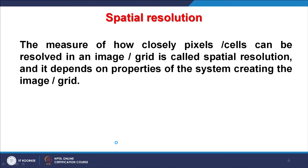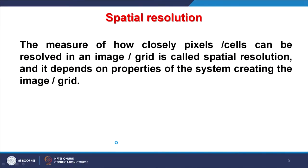Spatial resolution is defined as the measure of how closely pixels or cells can be resolved in an image — that is, how well you can identify different objects in two adjacent cells or pixels. It depends on the properties of the system creating the image or grid. If two adjacent cells have a large difference in values, they will appear very distinct; if they have similar values, distinguishing them becomes more difficult.